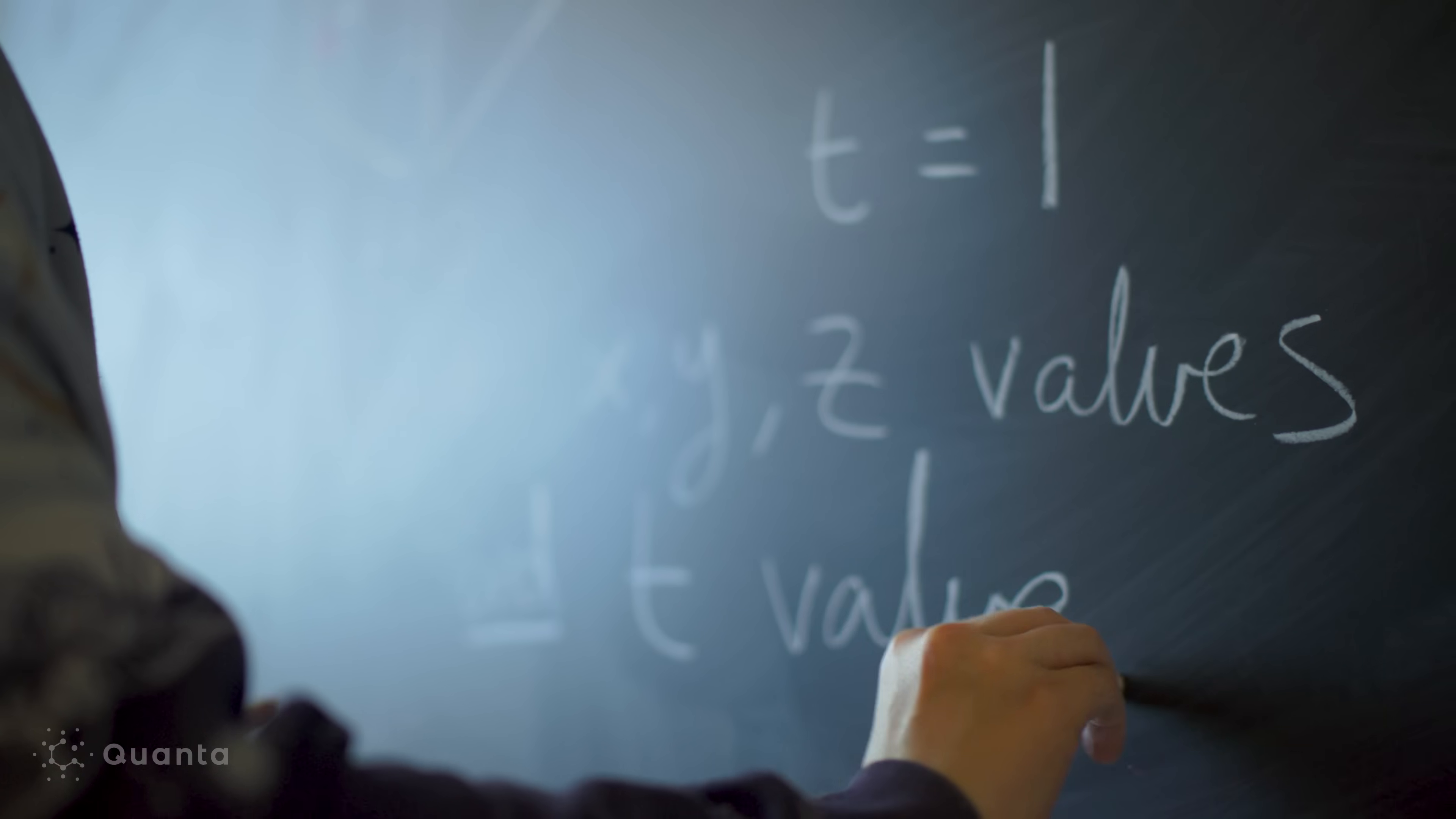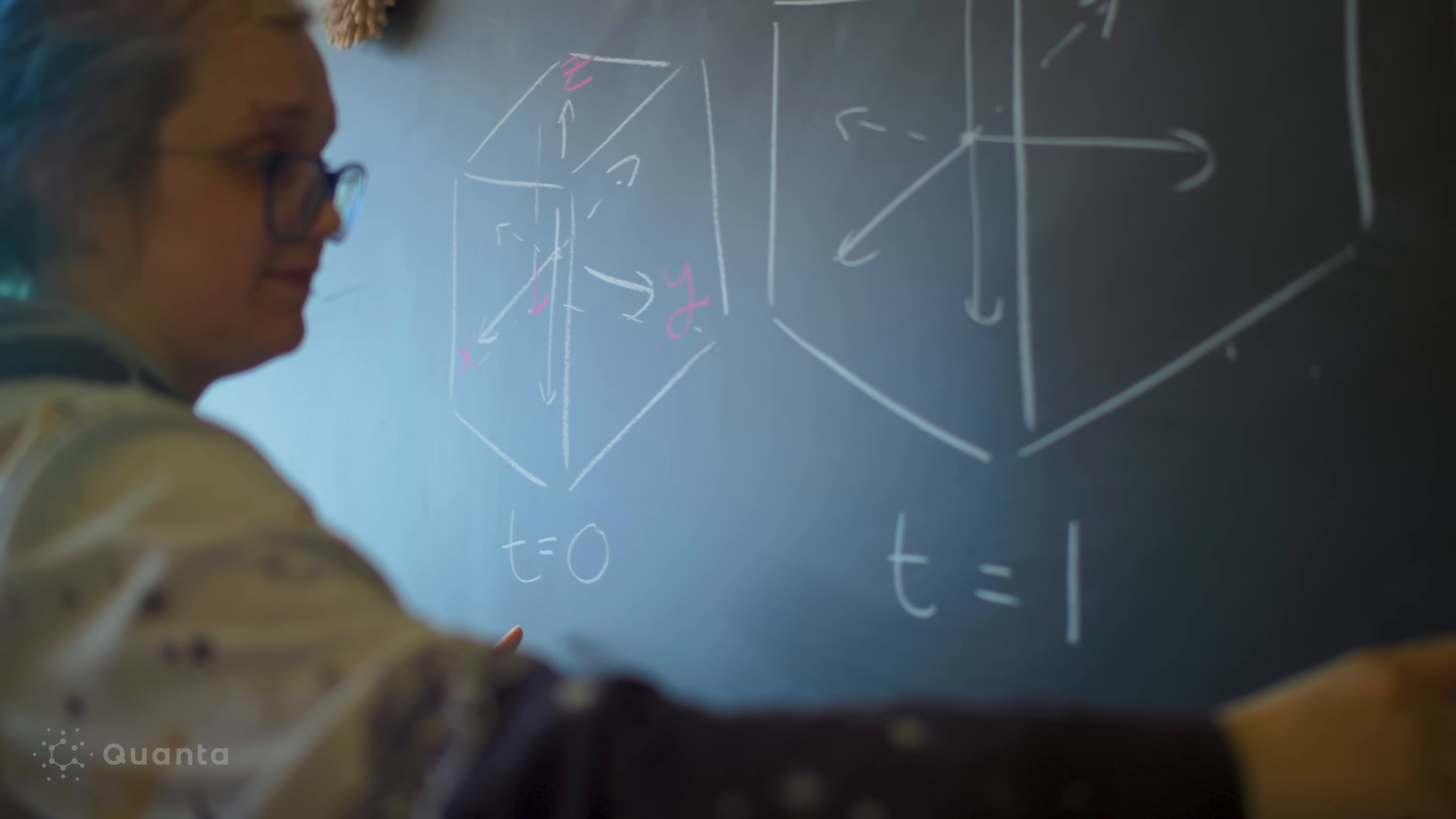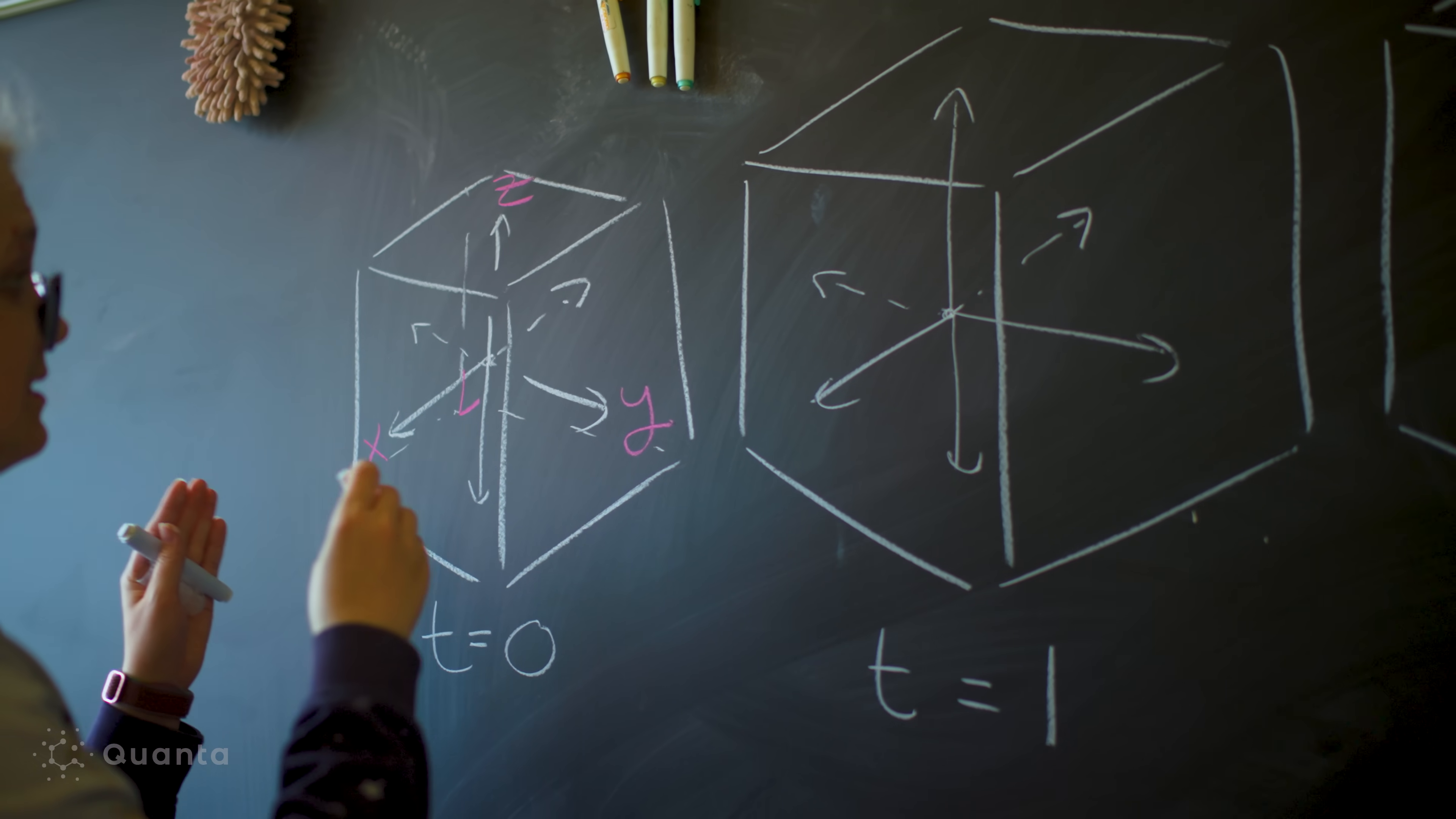A four-dimensional manifold is like our three-dimensional space, except there's a new perpendicular direction. So in a four-dimensional manifold, starting at any point, you can go forward-backward, you can go left-right, you can go up-down, and now there's a new dimension that I don't have a good name for.